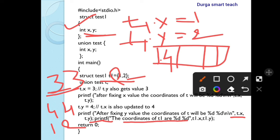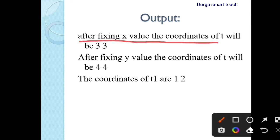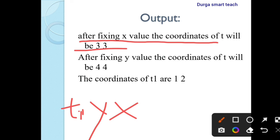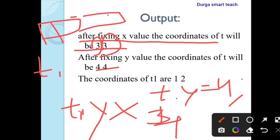Next, the coordinates of t1 are printed. t1.x equals 1, t1.y equals 2, so the output is 1,2. In structure, t1.y does not get replaced because memory is allocated separately for x and y — that's why the output is 1,2. After fixing x value, the union coordinates will be 3,3. After fixing y to 4, three is replaced with four, so coordinates become 4,4. For the structure t1, the output is 1,2 because memory is allocated separately.